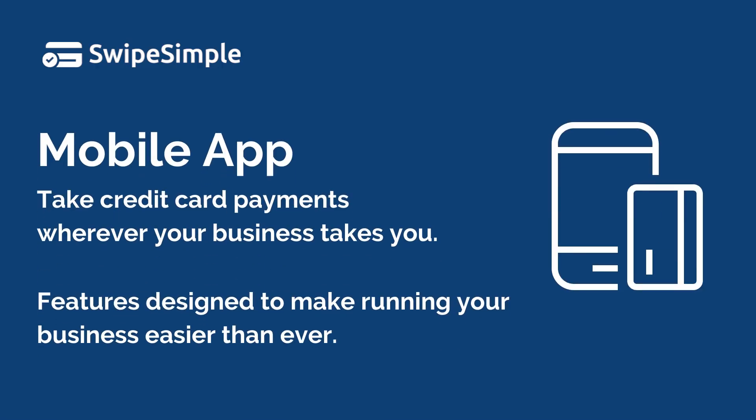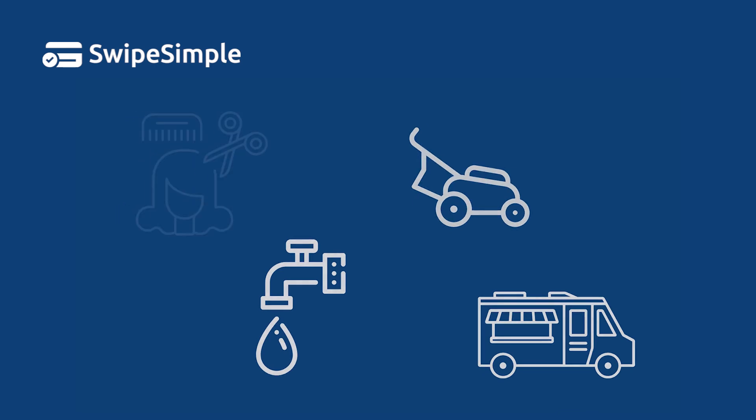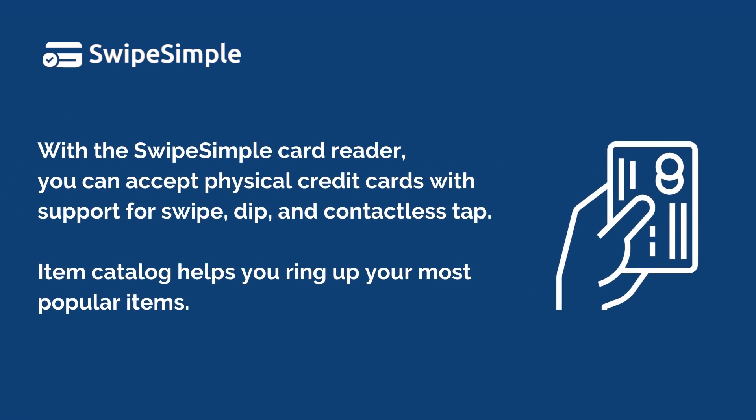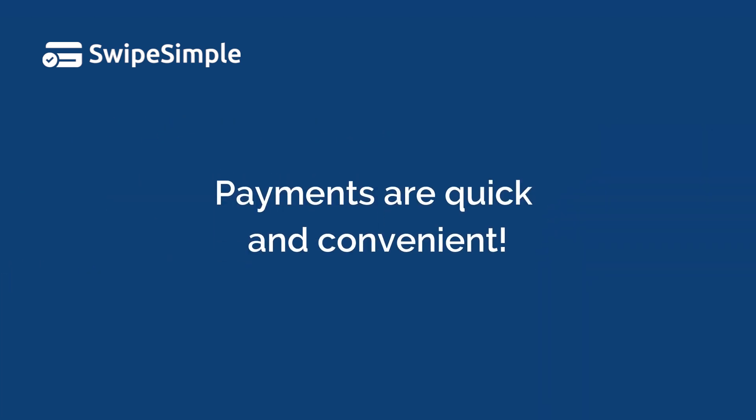Another way businesses can accept payments is with the Swipe Simple on-the-go mobile app. This is a great solution for businesses that are working with customers in person but are out of the office. All you need is a Swipe Simple mobile card reader and a mobile device such as a smartphone or a tablet. The easy-to-use app has multiple features to make the payment quick and convenient.